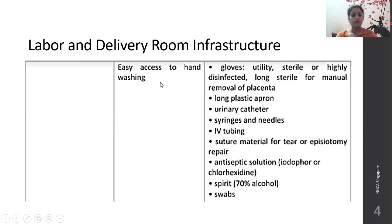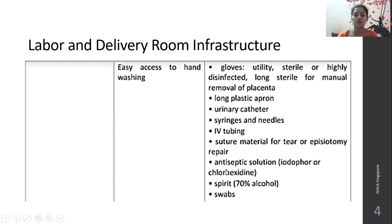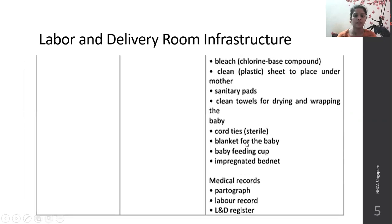Easy access to hand washing should be available, gloves, urinary catheters, syringes, needles, IV tubings, which are materials. Antiseptic solutions like iodophore or chlorhexidine, spirit, 70% alcohol, swabs, and cotton swabs should be available.